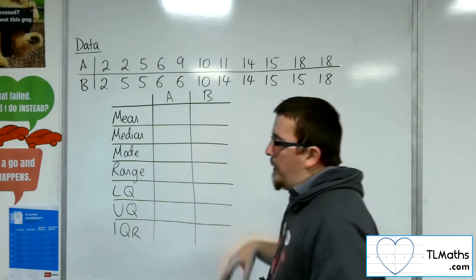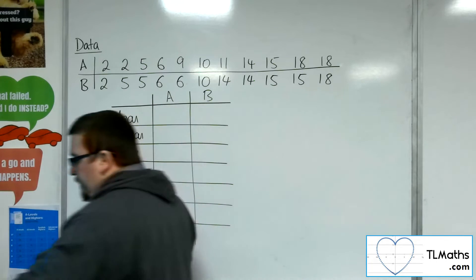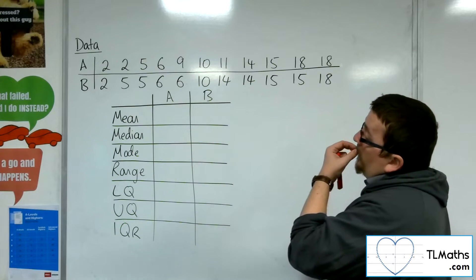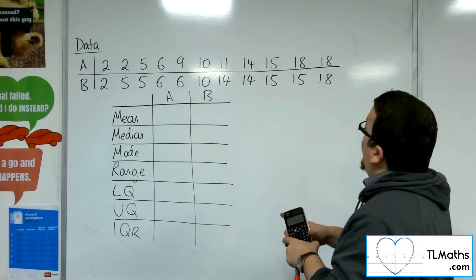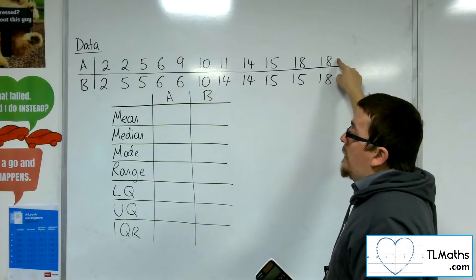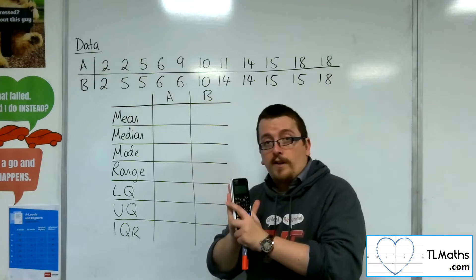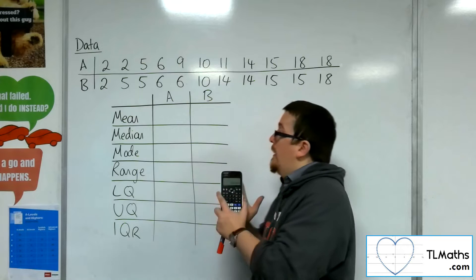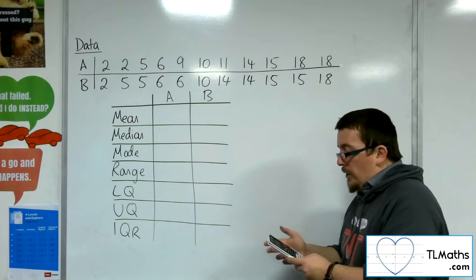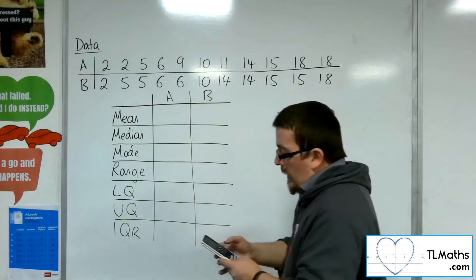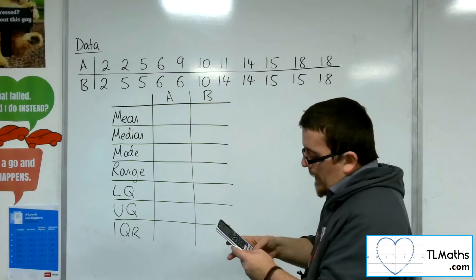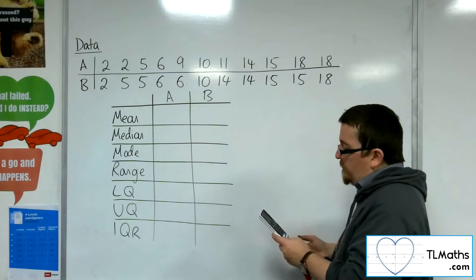So first of all, let's start with the mean. What I want to do is add up all of the A's numbers and then divide by how many there are. Now remember, your calculator can do this for you. So you go to menu, and then number six — that's the statistics menu on a Casio — and then number one for one variable.